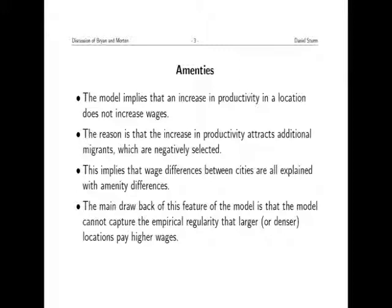More specifically, the model implies that an increase in productivity in a location does not increase wages—that's a slightly more technical assumption driven by the Fréchet distribution. So any difference in nominal wages across space is going to be explained by amenity differences. This implies that wage differences between cities are all explained by amenity differences. However, we know there is a clear correlation between nominal wages and city size. I don't think this matters first-order for the results, but we should be clear that amenities here capture a large thing, and the model won't capture other important features of the spatial distribution of nominal wages.